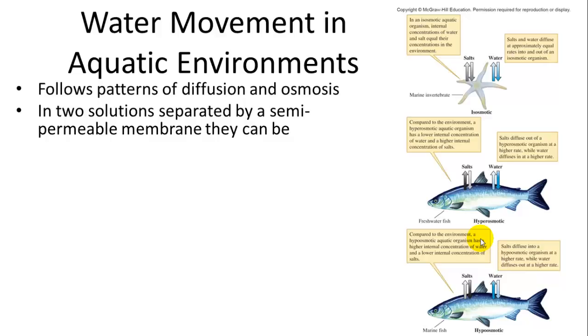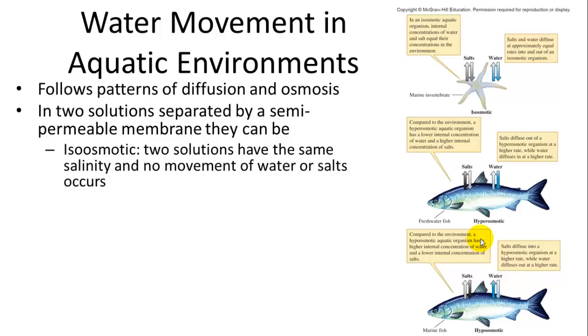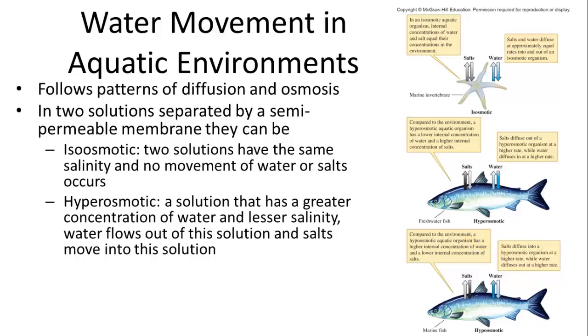So water movement in aquatic environments follows patterns of diffusion and osmosis. And as you know from basic biology, diffusion is the flow of greater concentration to lower concentration of molecules. Osmosis is the movement of water through a semipermeable membrane. And it can be isoosmotic, which means the two solutions have the same salinity, and there's no movement of water or salts. And that's what happens in most invertebrates that are found in the sea. They just have an isoosmotic environment. They are the same in salt and water concentration as their environment.